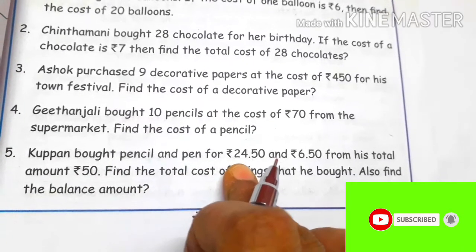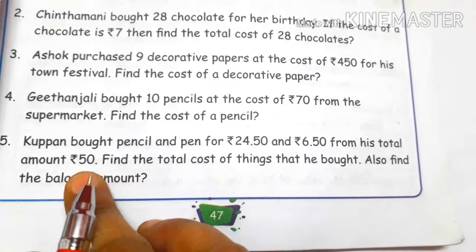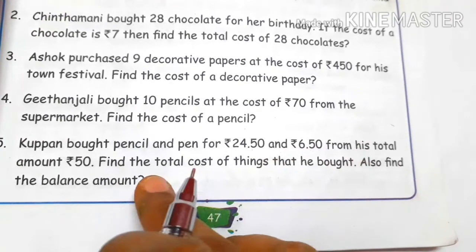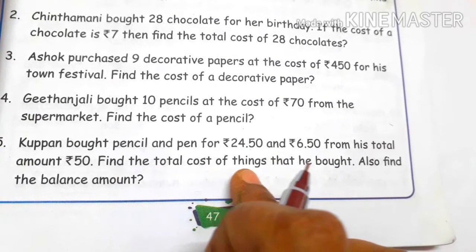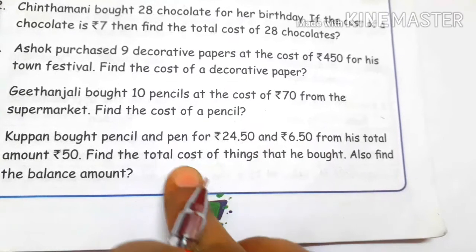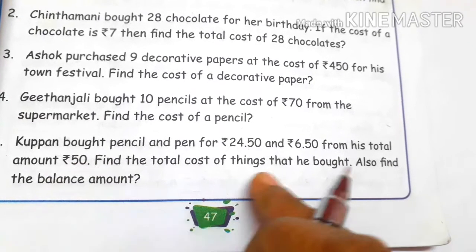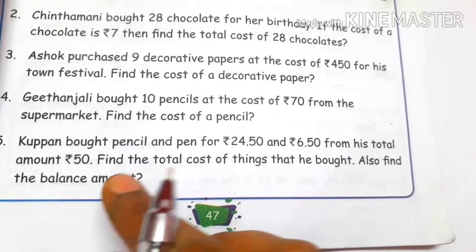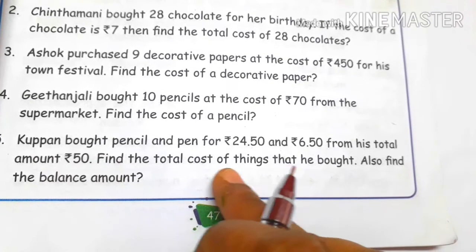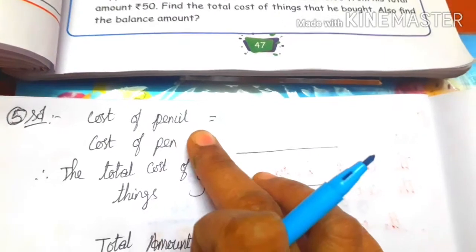You have to buy a pencil and pen for rupees 24.55 and rupees 6.55 from a total amount of rupees 50. Cost of pencil equals rupees 24.55. Cost of pen equals rupees 6.55.